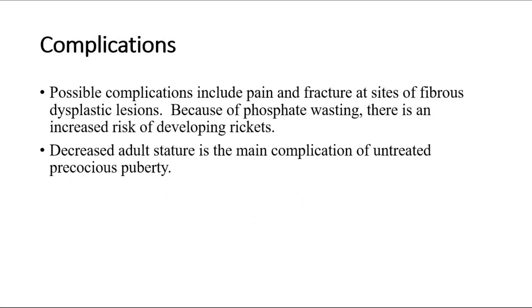Possible complications include pain and fracture at sites of fibrous dysplastic lesions. Because of phosphate wasting, there is an increased risk of developing rickets. Decreased adult stature is the main complication of untreated precocious puberty.